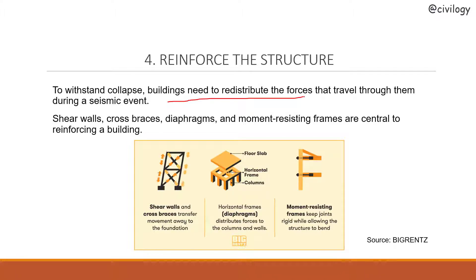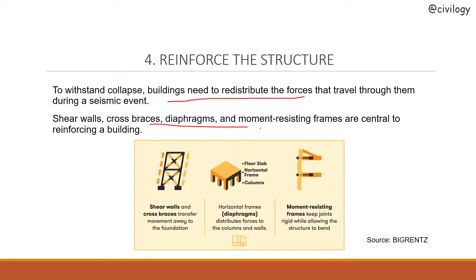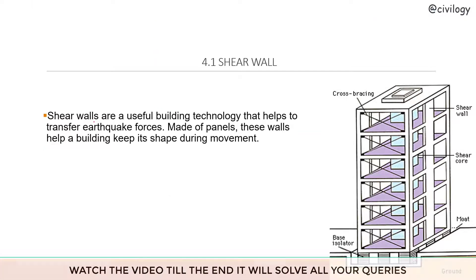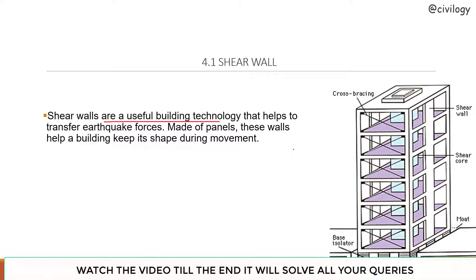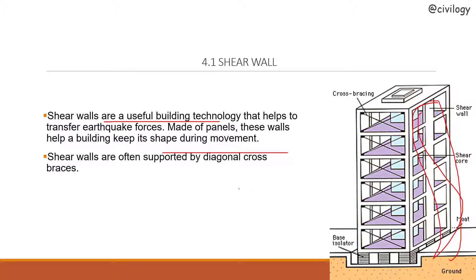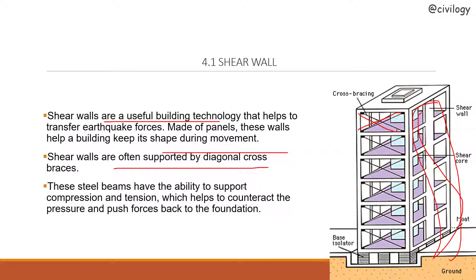The fourth method is to reinforce the structure to withstand collapse. Buildings need to redistribute forces that travel through them during a seismic event. Shear walls, cross braces, diaphragms, and moment resisting frames are central to reinforcing a building. Shear walls are panels that help buildings retain their shape during movement. They are often supported by diagonal cross braces — steel beams that can support both compression and tension, helping to counteract pressure and push forces back to the foundation.